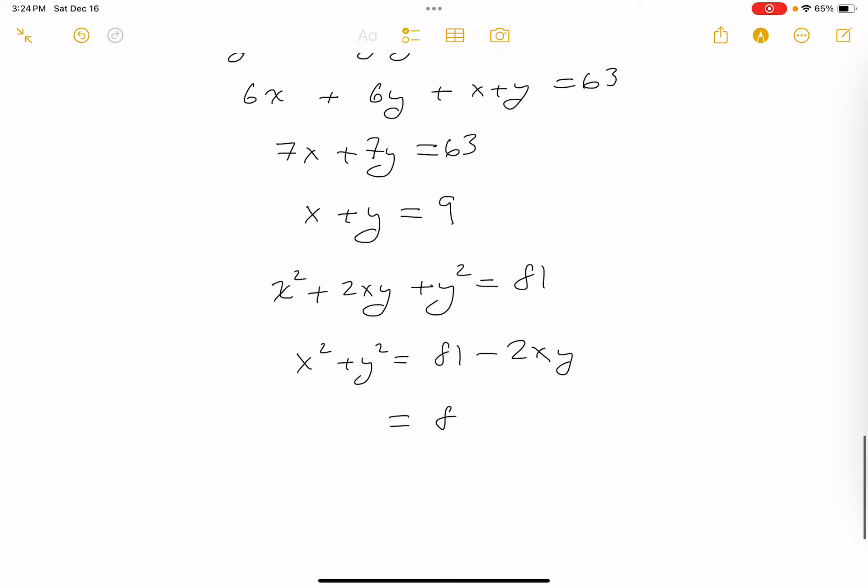x² plus y² would be equal to 81 minus 2xy. And I hope you recall that we know what xy is. It's 6. So it's 2 times 6. So it's 81 minus 12, which is going to turn out to be 69. So x² plus y² is 69. Let's write that down. And we're done. Thank you.